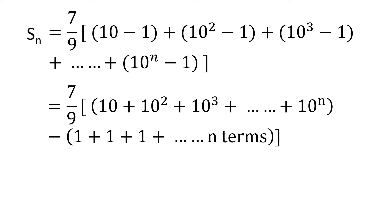So what we have in the square brackets is a geometric series with common ratio 10, and it contains n terms, and then we subtract another series, in which we are adding 1 n times. Adding 1 n times gives us n.